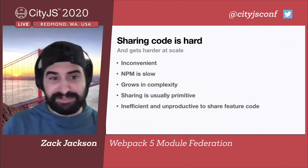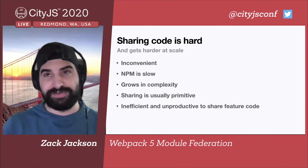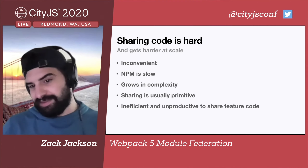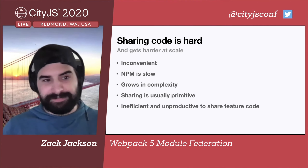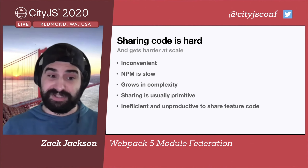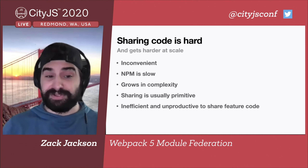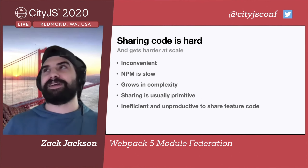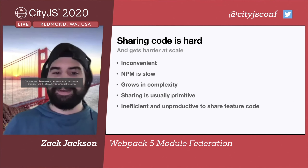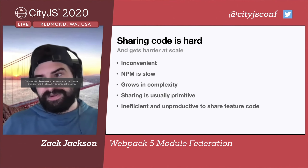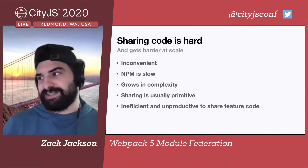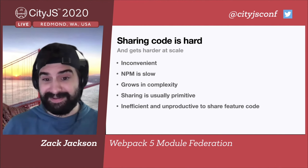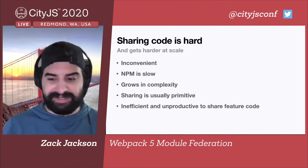Module Federation aims to solve some challenges that we have in the JavaScript industry at large. One of them is sharing code is hard, and it gets much harder at scale. If we've ever had to deal with two apps that run separately but need to share something, we've probably encountered inconvenience — NPM being slow, complexity ballooning as you need to share more. Any sharing that you do is usually primitive. Externals is the most common way to share something, but it's very primitive — you're locked into that top-level request or you have to do it all by hand. At the end of the day, it's not scalable.